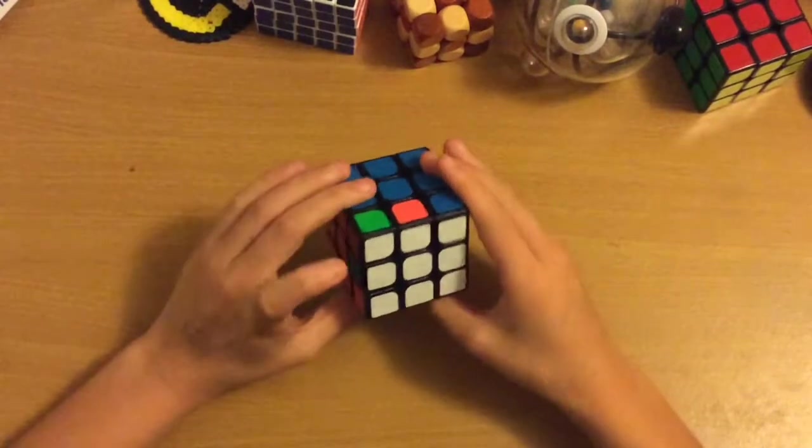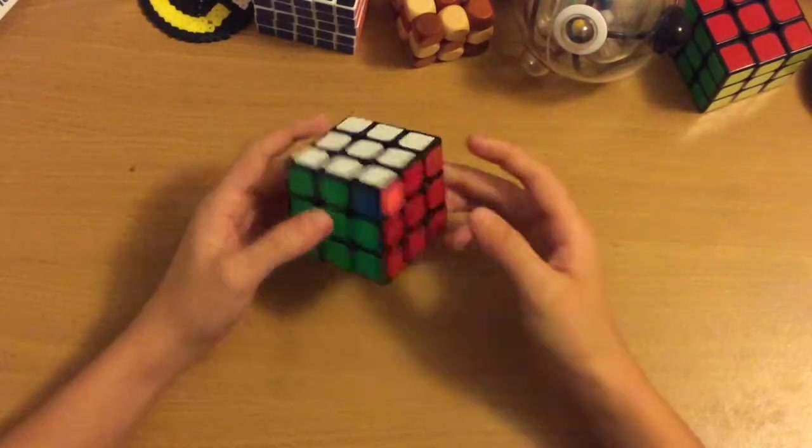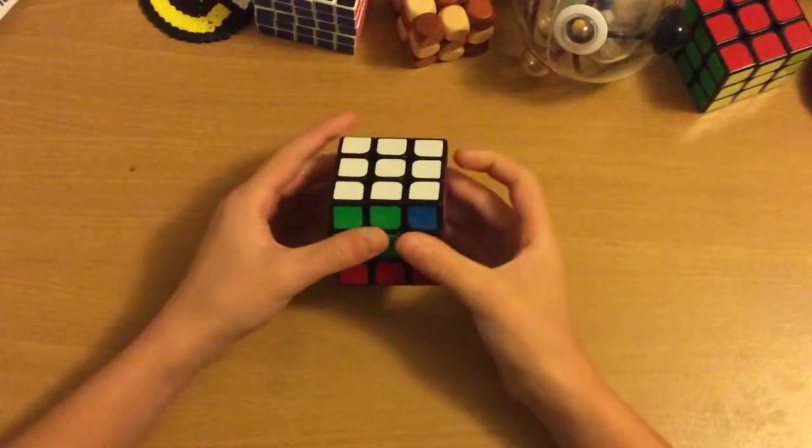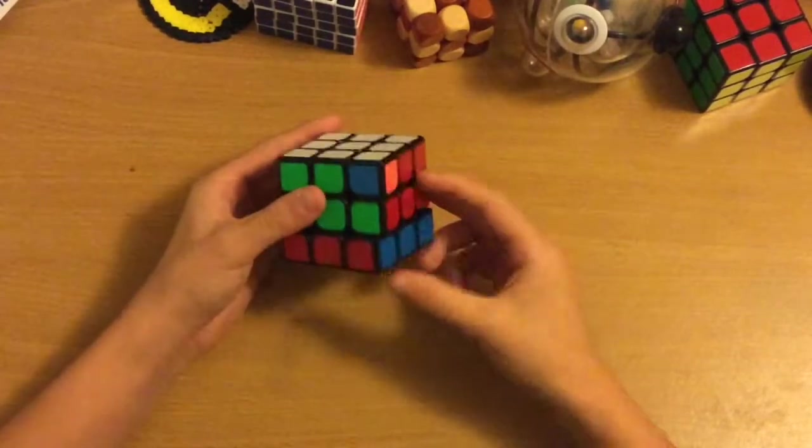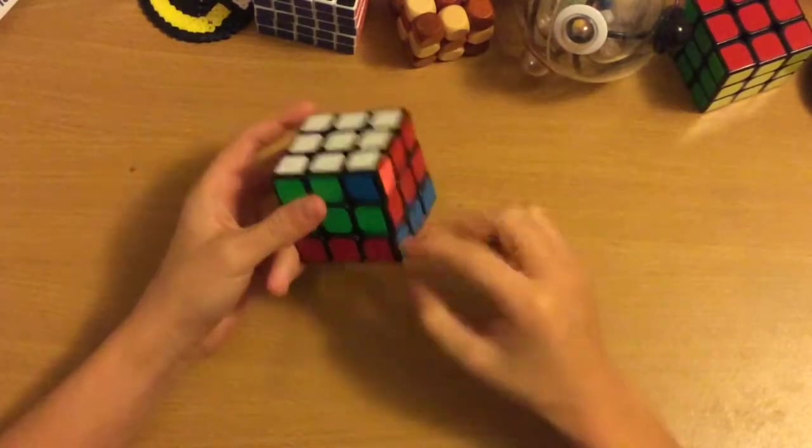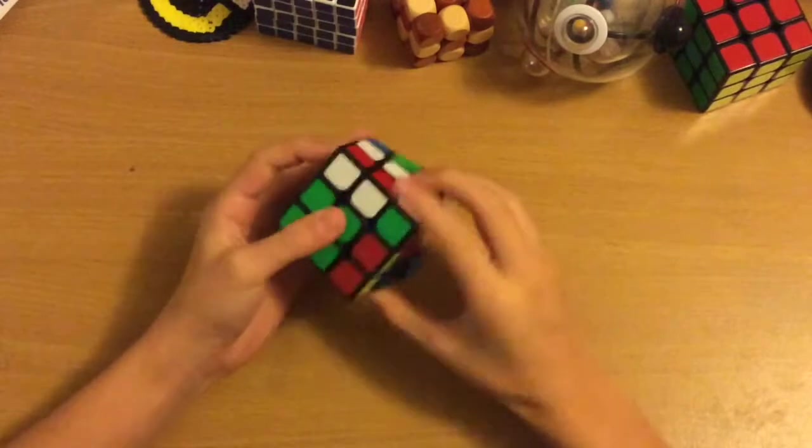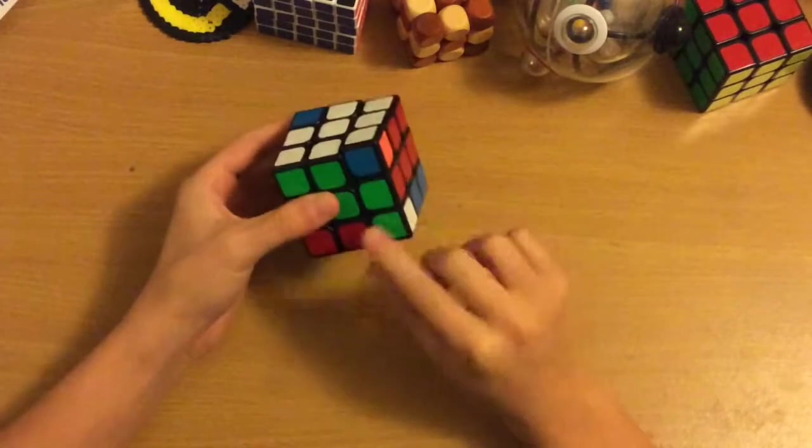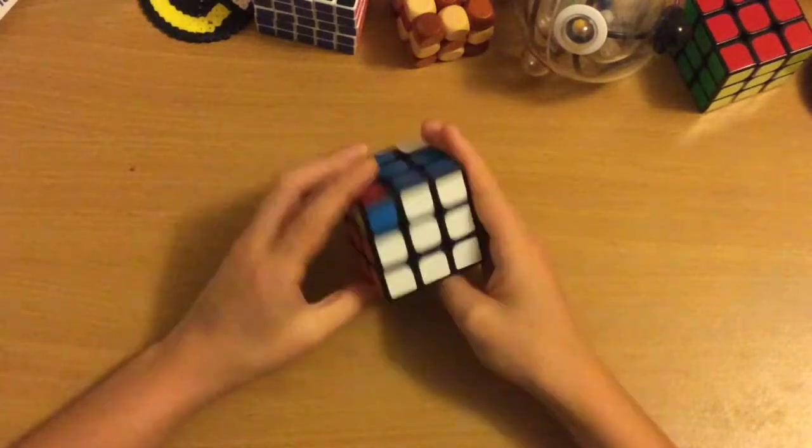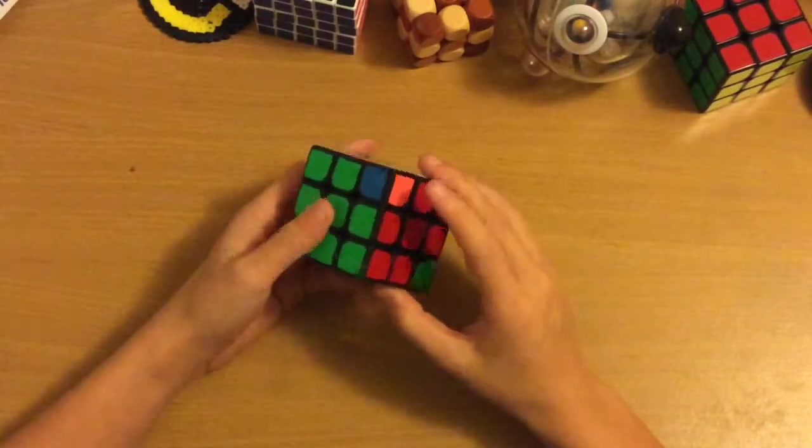It's the same thing. If you want to switch this piece with, say, the T position right here, you just do a D prime to get the T to here, to the P position. Do your algorithm, and then undo the setup move. So that's D. So yeah, that's basically how it works.